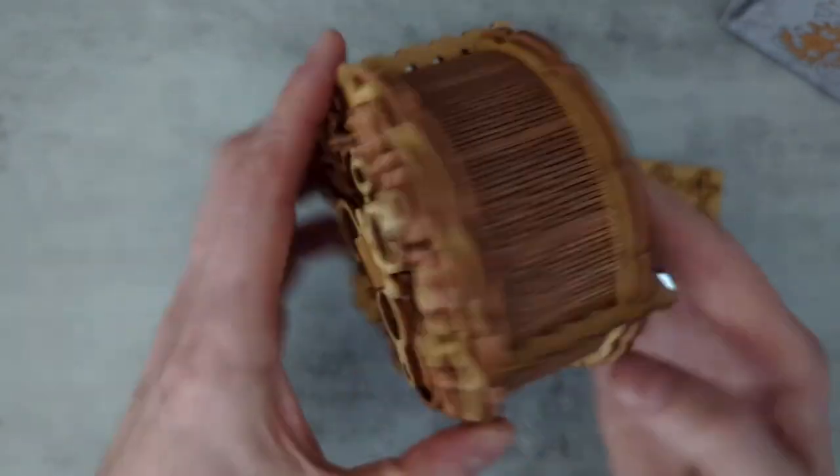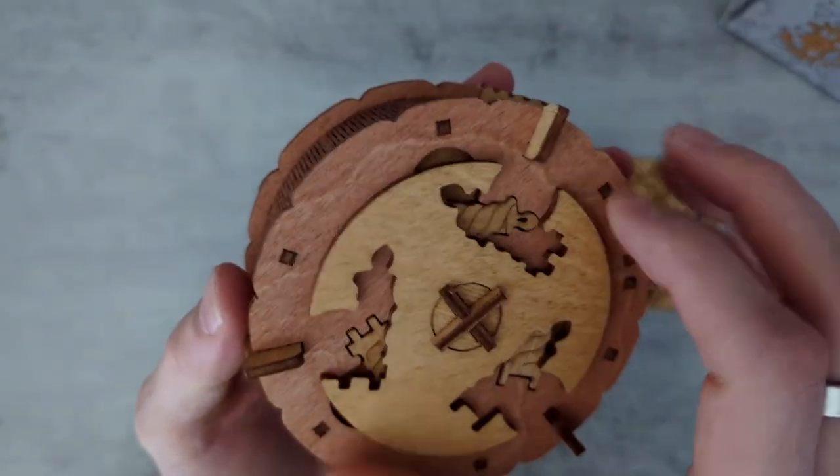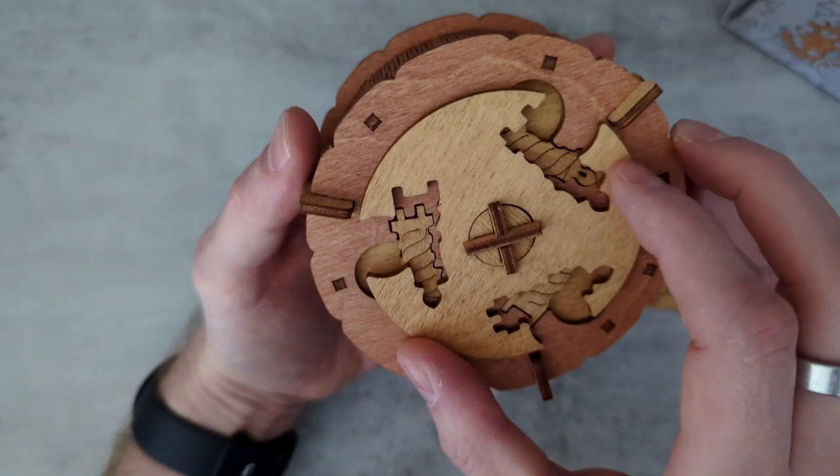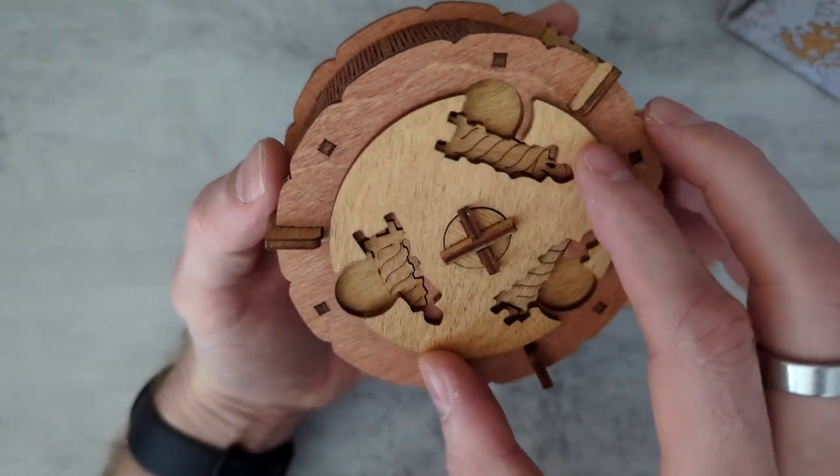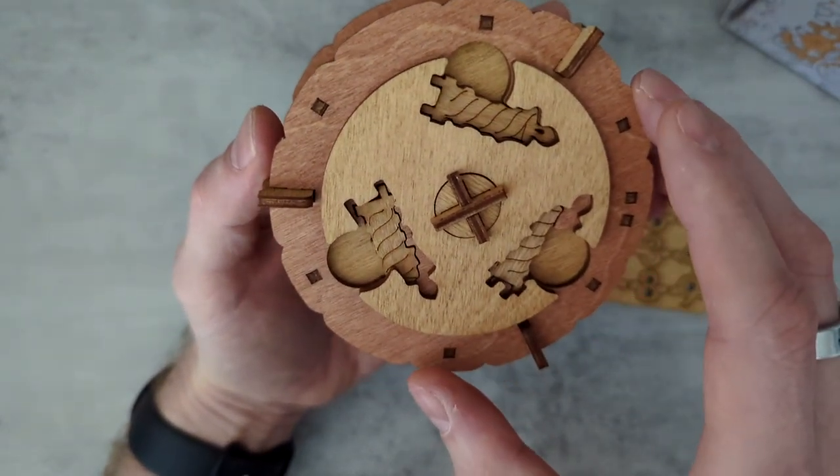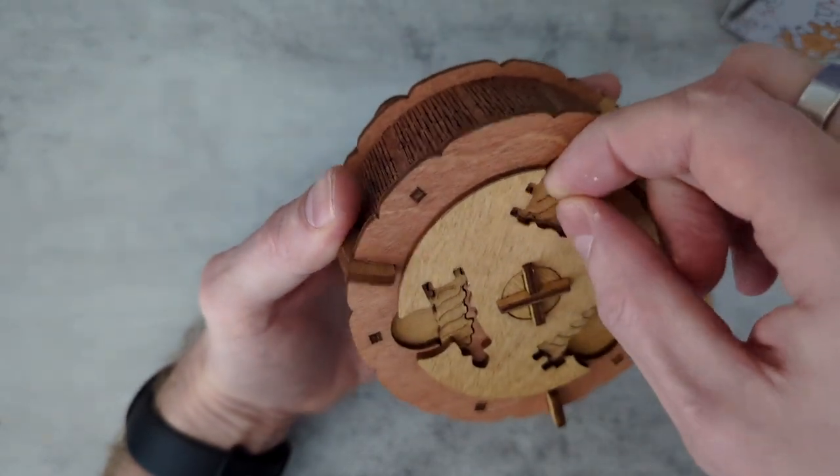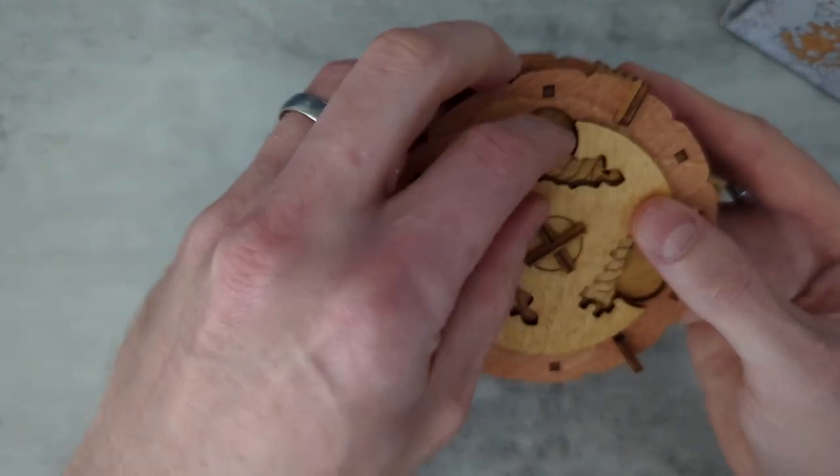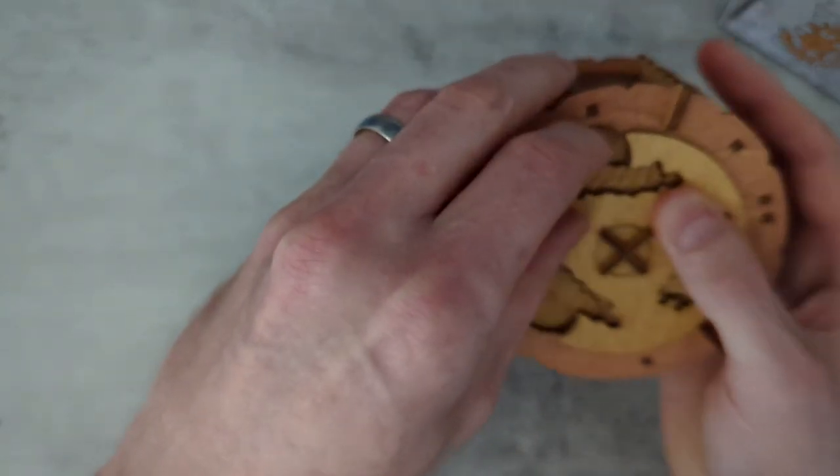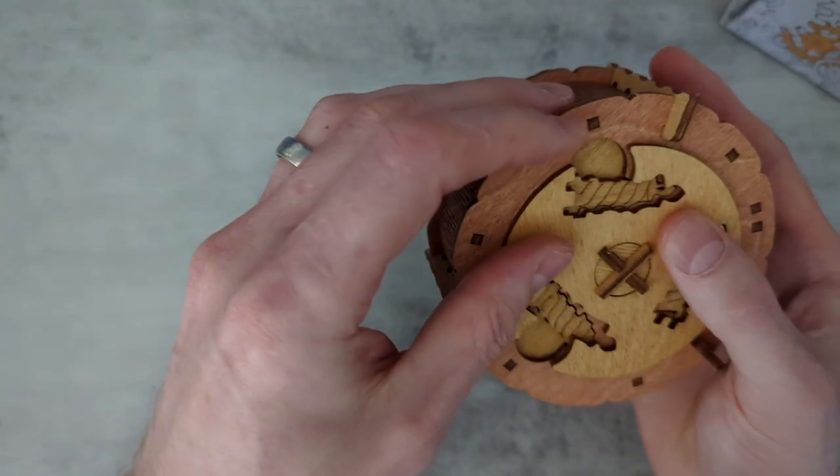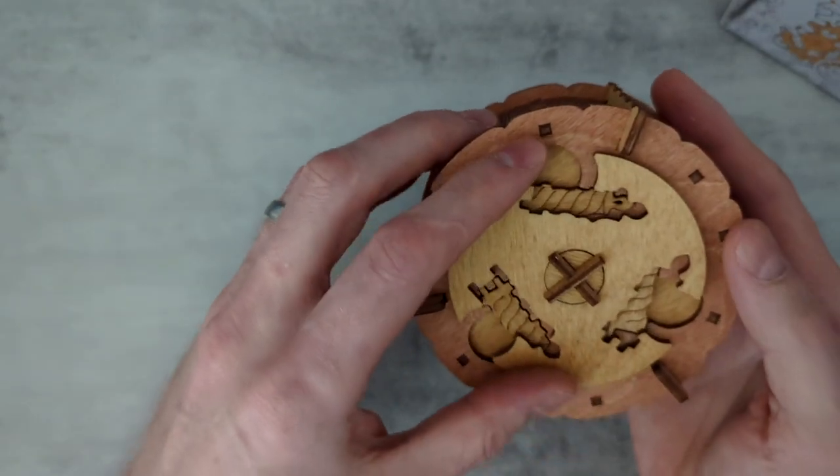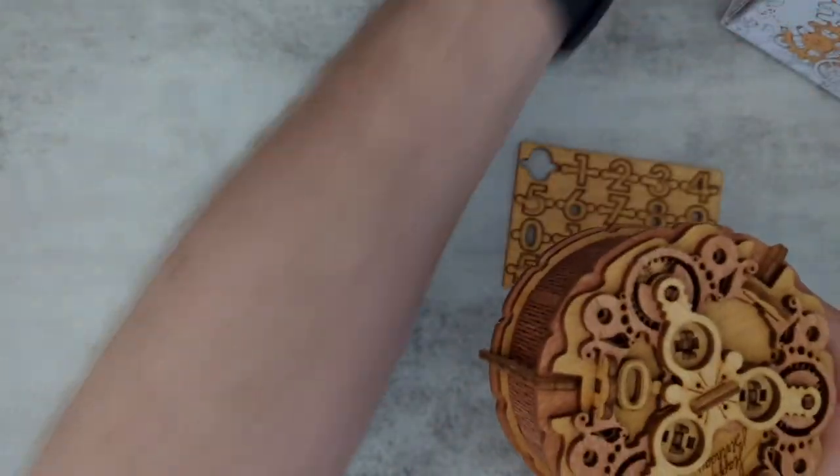So we turn this at the bottom. So this turns, and we have a bunch of pieces in there. Does that pop out through this gap, maybe? I guess these are candles, right? These are birthday cake candles. The whole thing is like a birthday cake, right?